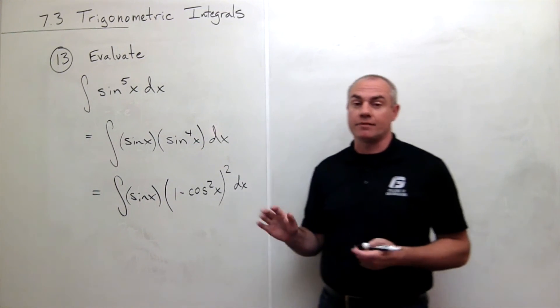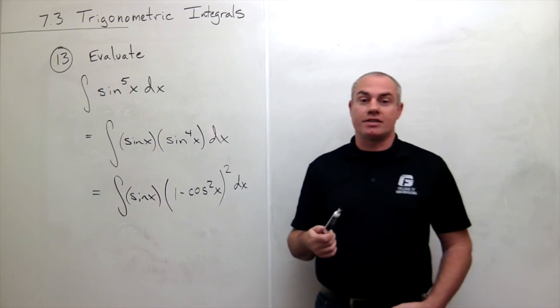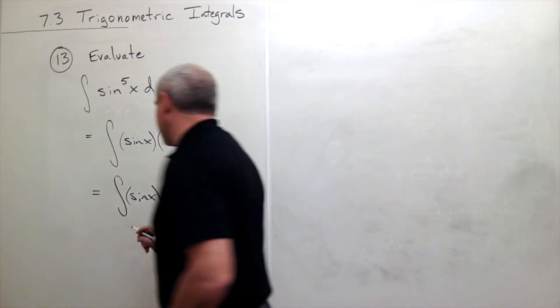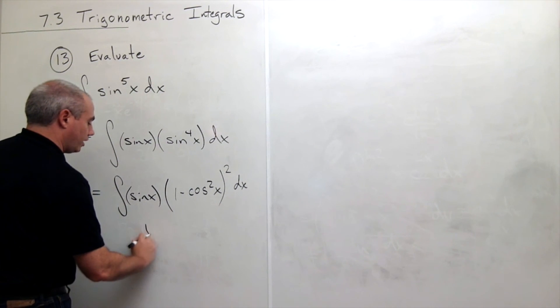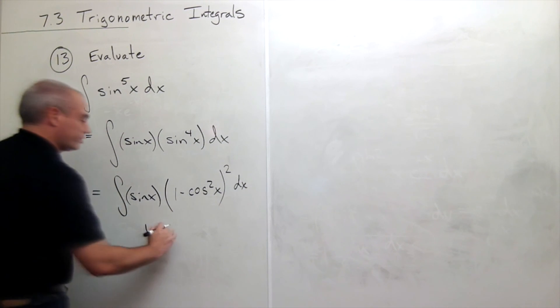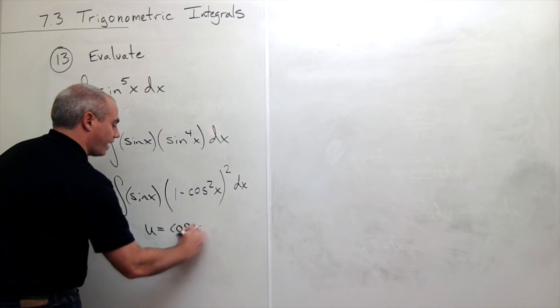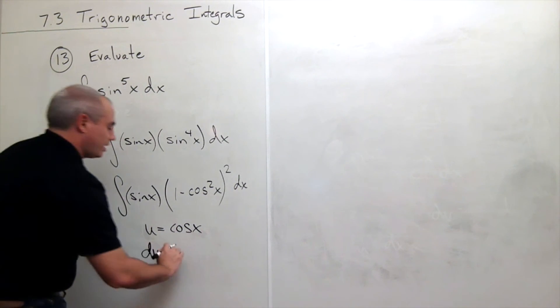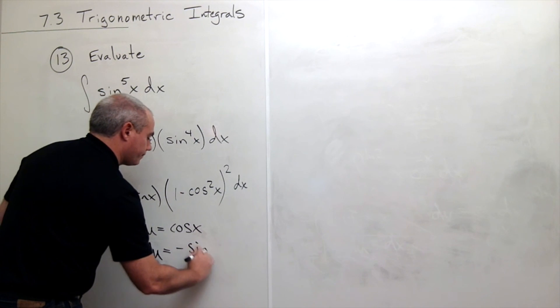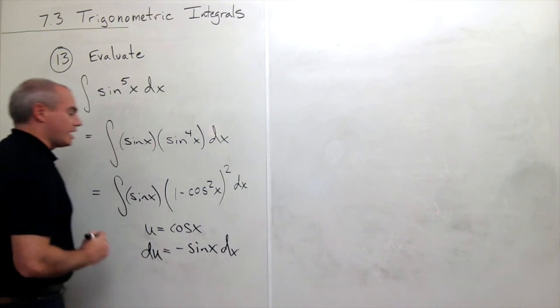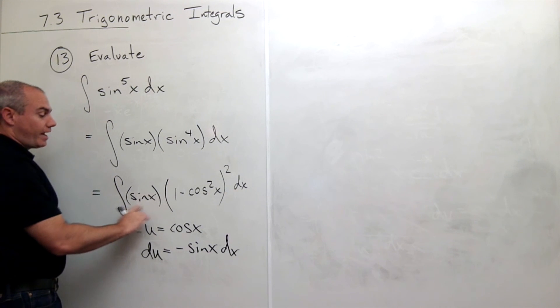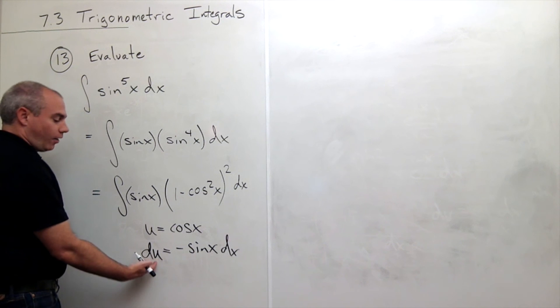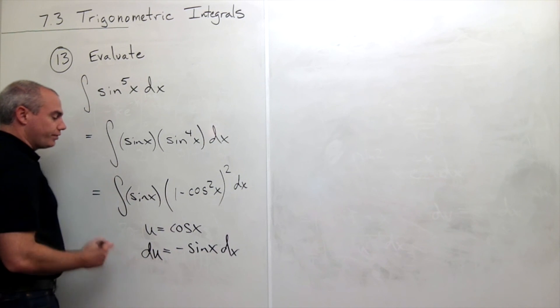Everything's fine here. Now the reason that I wanted to do this little trick and put it in this form is now I can make a nice u substitution. I'll let u be equal to cosine of x, which means that du is going to be negative sine of x dx. That's why I have this sine of x sitting out here by itself, to help me write in my du in the substitution.